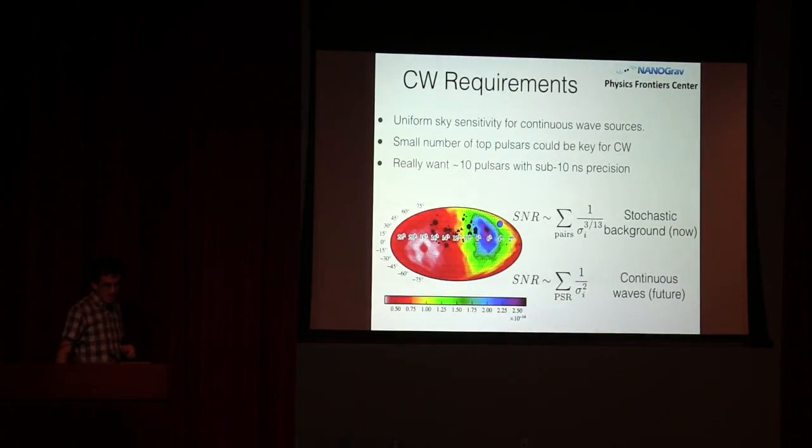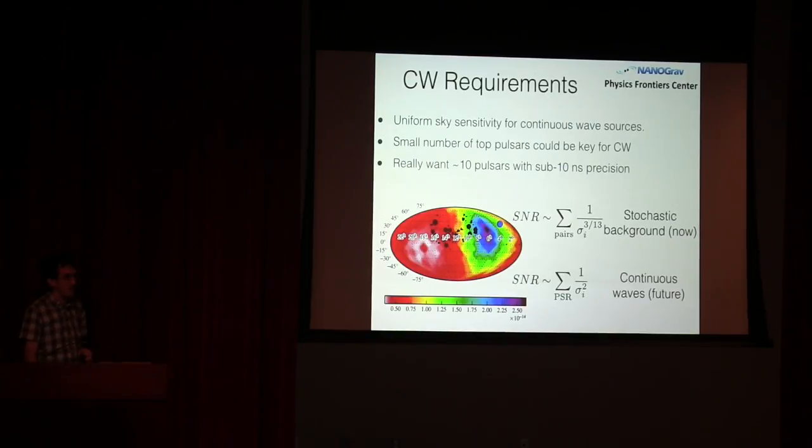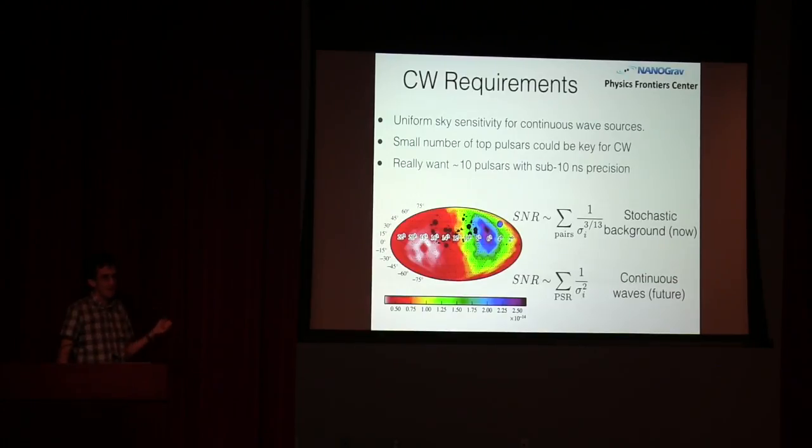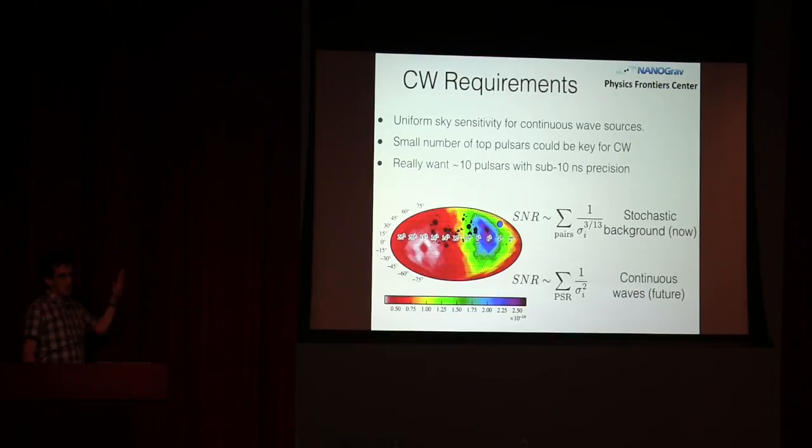What you really want is to look at individual really well-timeable pulsars. Right now we need a lot of pulsars that we time really often, because of the stochastic background. We're really dominated by the sum over pairs of some number that is a weak power of the timing precision. So the timing precision for individual pulsars doesn't matter hugely. We really just want as large numbers of them, and there's a factor in there for the cadence and things like that that I've left out. So you want a lot of pulsars that you observe very often.